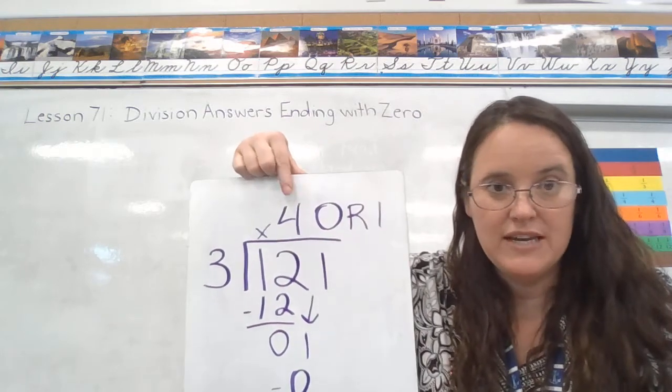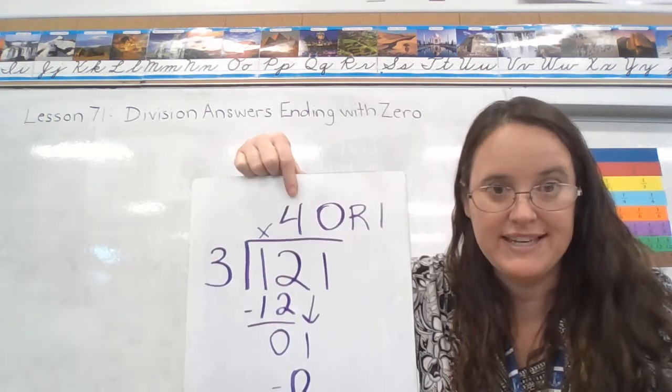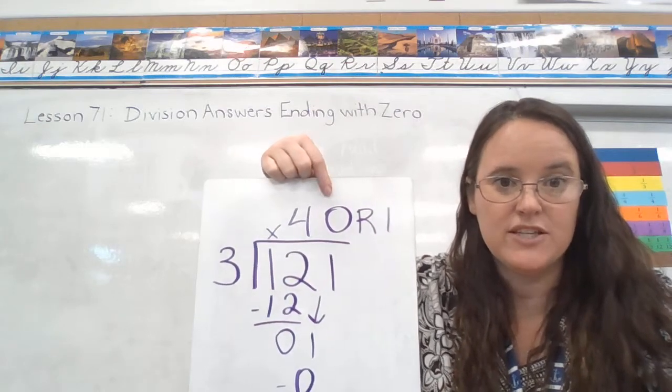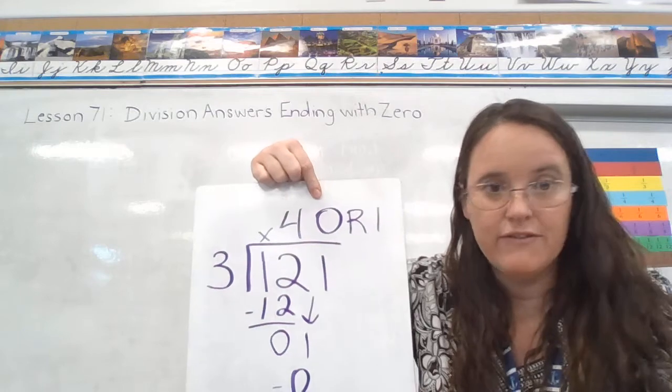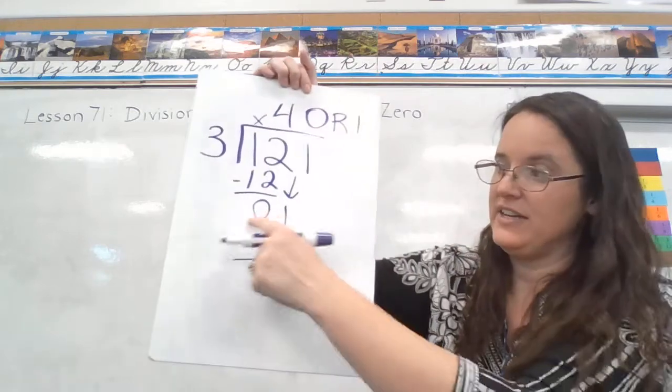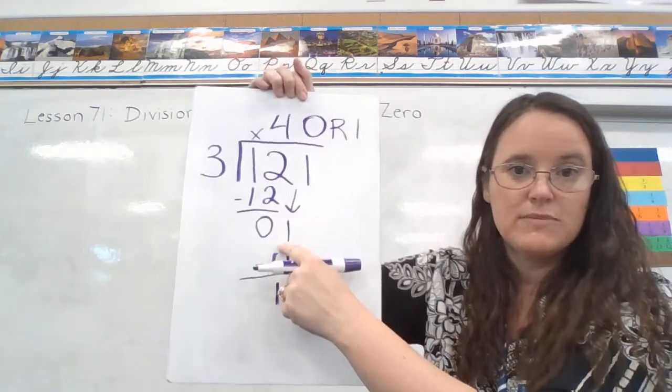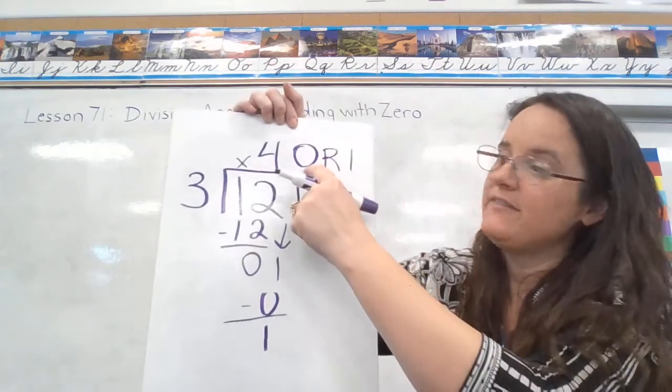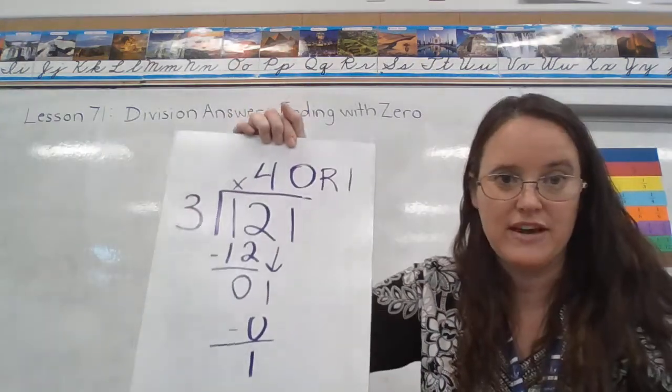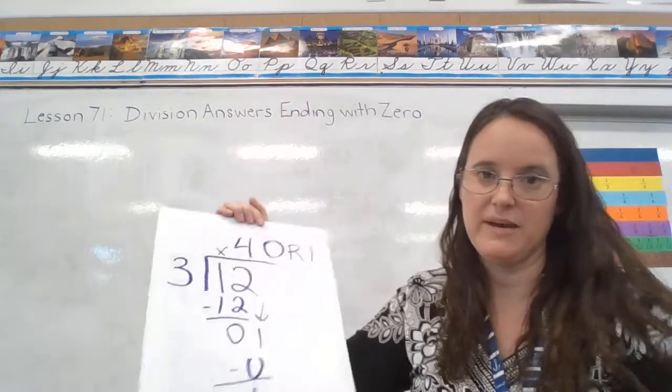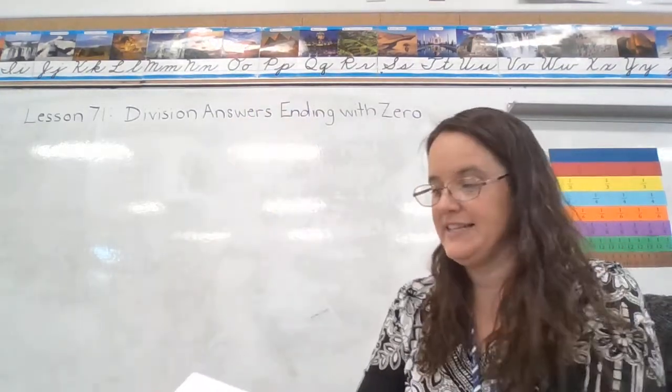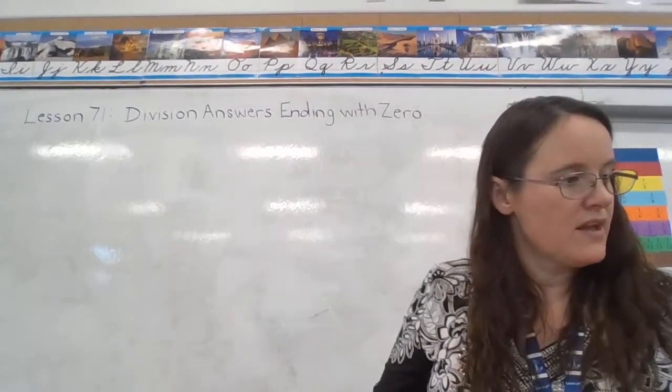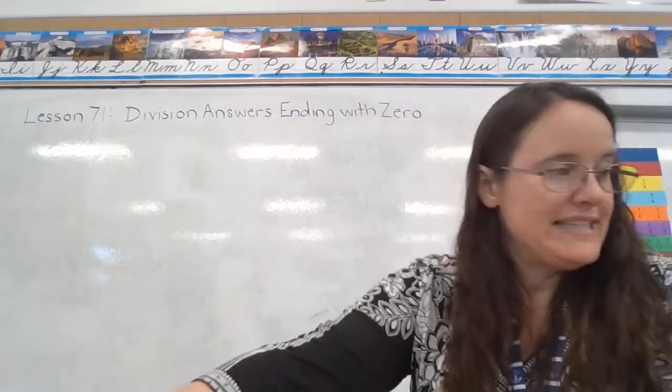So when you write your answer here in the tens place value, you need to make sure that you fill a zero into the ones if you can't divide down here. If this number is too small and we just have a remainder, that's fine, but you have to make sure you fill in that zero there. You say, oh, I can't divide one by three, so we fill in a zero.